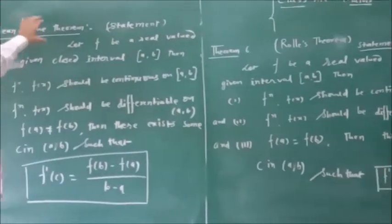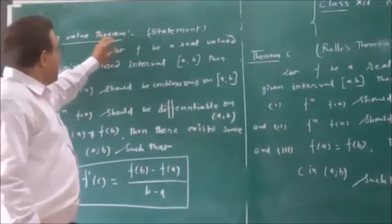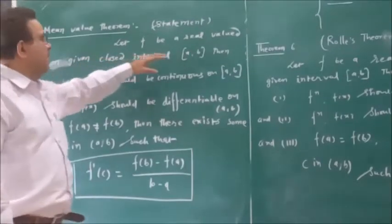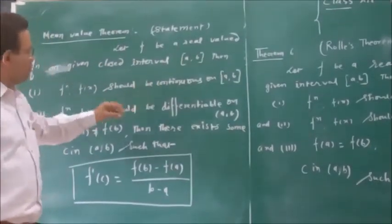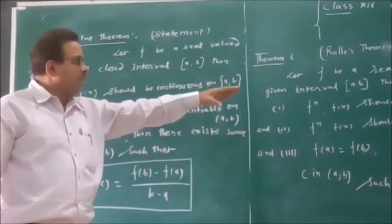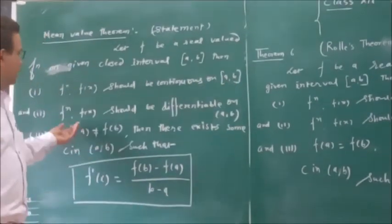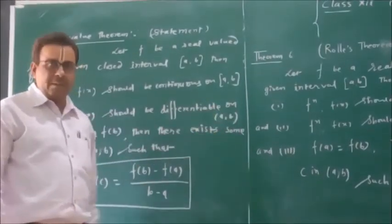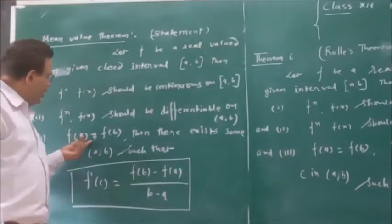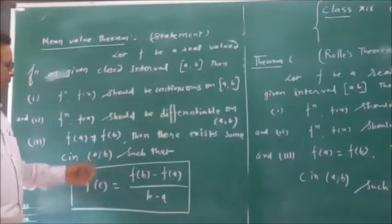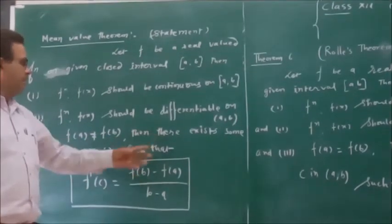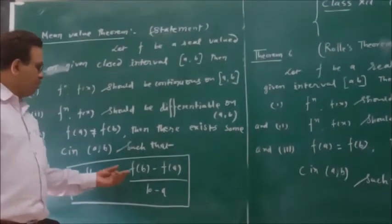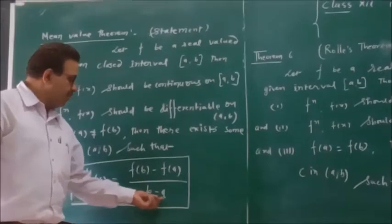Similarly, the Mean Value Theorem statement: the first point is that the function f(x) should be continuous on closed interval a to b. Second point is also the same — f(x) should be differentiable on open interval a to b. But the third point is different here — f(a) is not equal to f(b). Then there exists some c such that f dash c equals f(b) minus f(a) divided by b minus a.